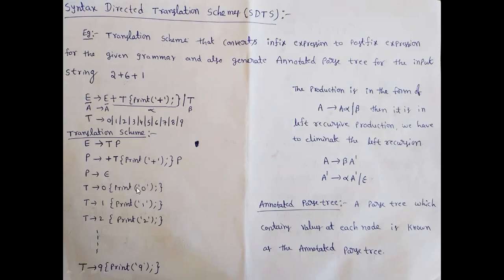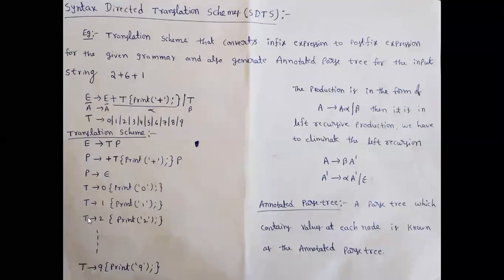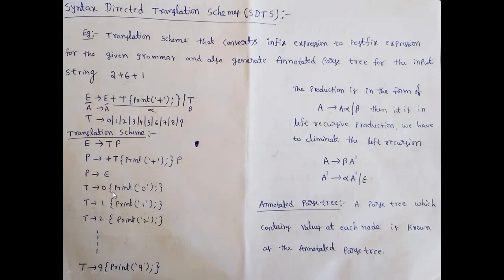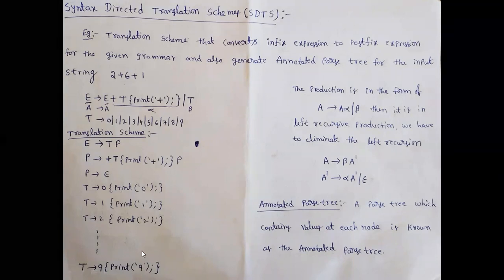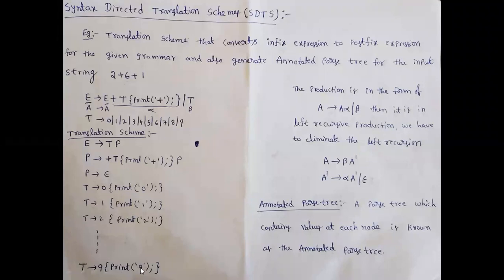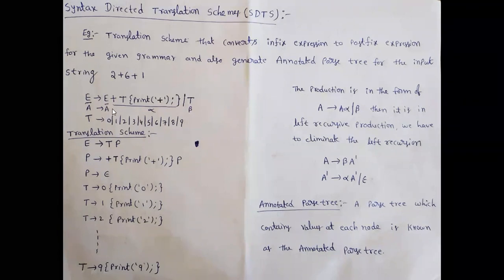For each T production, the semantic action is print followed by the digit in single quotes and a semicolon inside curly braces. So T produces 0 with semantic action { print('0'); }, T produces 1 with { print('1'); }, and so on up to T produces 9 with { print('9'); }. This is the complete translation scheme for the given grammar.